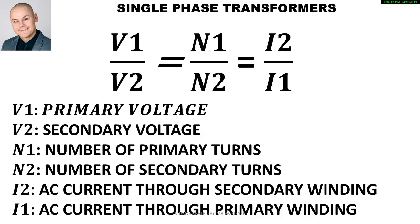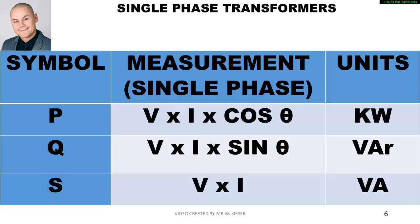V1 represents the primary voltage, V2 the secondary voltage, N1 the number of primary turns, N2 the number of secondary turns. I2 is the alternating current through the secondary winding and I1 is the alternating current through the primary winding.